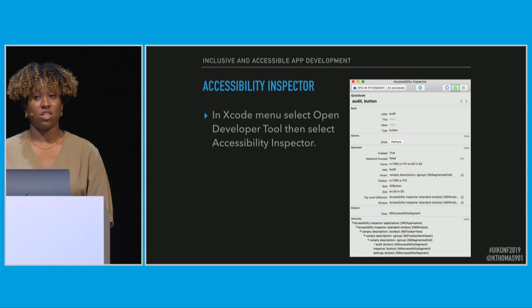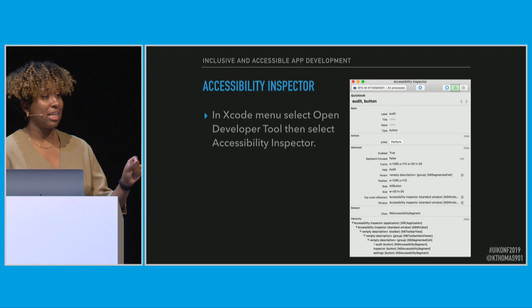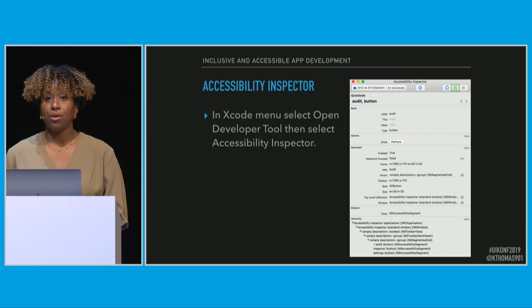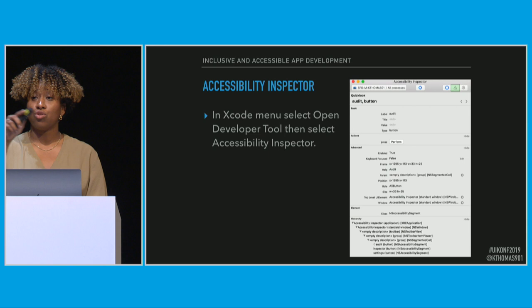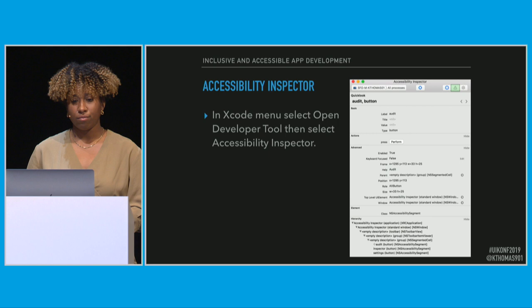While you're programming in the simulator, the Accessibility Inspector is going to be your best friend. Open it from the Xcode menu by selecting Open Developer Tool and then selecting Accessibility Inspector. This allows you to select any element or view in the simulator and see what the accessibility values and attributes are — the label, value, type, hints, traits — and you can even perform actions. You can also navigate the view hierarchy right inside the Accessibility Inspector: move to the parent element, move to the next element, and see if your view hierarchy actually works with the screen reader.